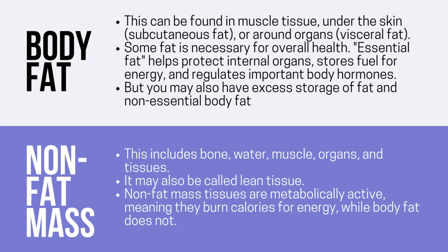Body fat can be found in muscle tissue, under the skin — what we call subcutaneous fat — or around organs, which we call visceral fat. Some fat is necessary for overall health. Essential fat helps protect internal organs, stores fuel for energy, and regulates important body hormones. Not all fats are bad for our body; there are some fats that help convert fat into fuel. You may also have excess storage fat and non-essential body fat.